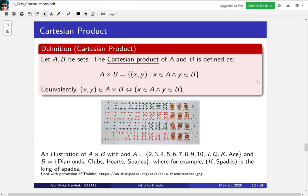The last one we'll look at today is the Cartesian product. If you have two sets A and B, the Cartesian product of A and B is defined as A cross B, which is the collection of all pairs x, y, where x is in A and y is in B. So let me say that again.